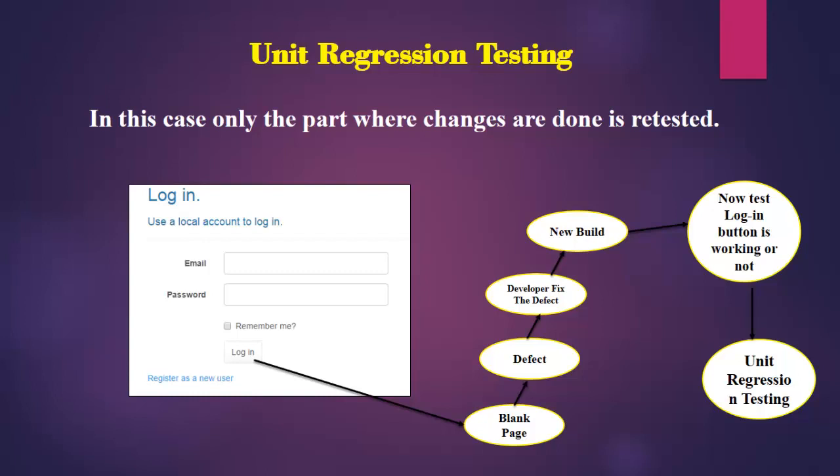The test engineer starts testing all the features. While testing, the test engineer does not enter any values in the fields and clicks the submit button (login button). It goes to a blank page, and the test engineer communicates the defect to the developer. The developer fixes the defect and gives new build two. Now, to make sure fixing the defect in the login button does not impact any other fields, the test engineer tests only the login button — this is called unit regression testing.